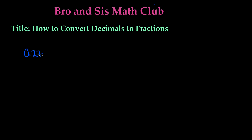So when you have decimals, we know that our first place value is going to be the tenths place. So that means 2 is in the tenths place, or we can also say this is 2 out of 10. And our 7 is going to be in the hundredths place, and we can also write this as 7 out of 100.